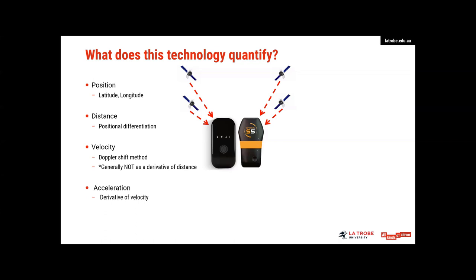I want to make this very clear, though, but there's another way we could get velocity, which is via distance. When we look at velocity via GPS, it is generally not as a derivative of distance. And this is important because we need to understand that our velocity and hence our acceleration measures are independent of our distance measures. So we have velocity there that's calculated via Doppler shift, and then we have acceleration, which is a derivative of velocity.